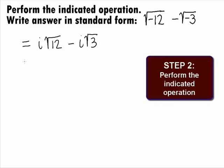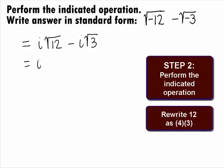In Step 2, we want to perform the indicated operation. Since the radicals are not like radicals, we cannot combine them the way they are written now, but we can simplify the square root of 12. We can rewrite 12 as 4 times 3 and get i square root of 4 times 3 minus i square root of 3.